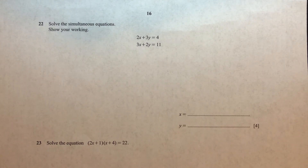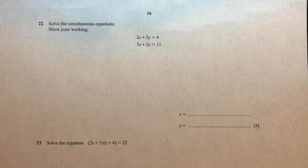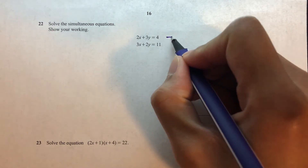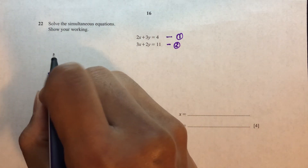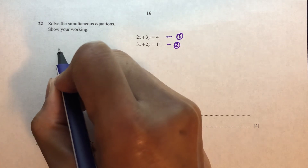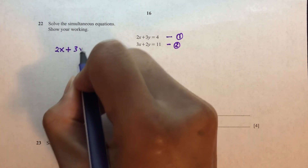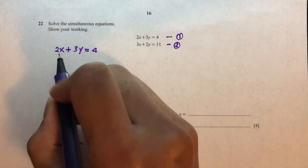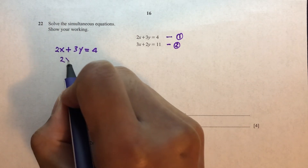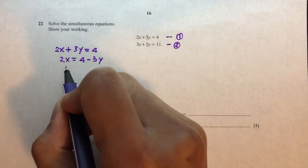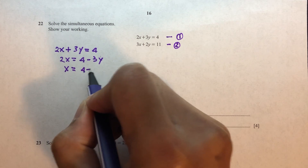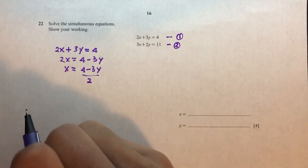Question 22: solve the simultaneous equations. Equation 1: 2x + 3y = 4. Equation 2: 3x + 2y = 11. Using the substitution method: from equation 1, 2x = 4 - 3y, so x = (4 - 3y) / 2.